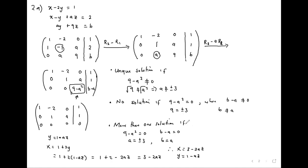What does this tell us about the properties of these systems? If, in the echelon or reduced echelon form, one row has all zeros on the left and a nonzero on the right, we have no solution. If none of the rows have all zeros on the left, we have a unique solution. If there are zeros on the left and zeros on the right for the last row, then we have more than one solution. That's what we must detect.